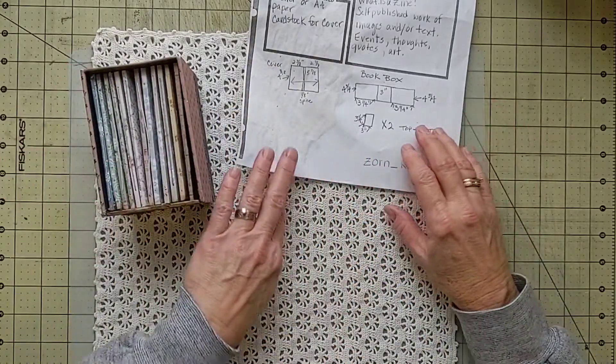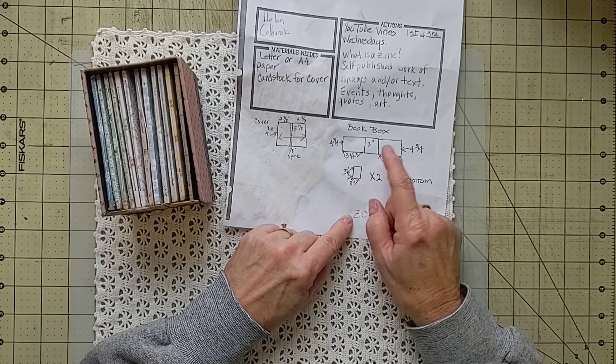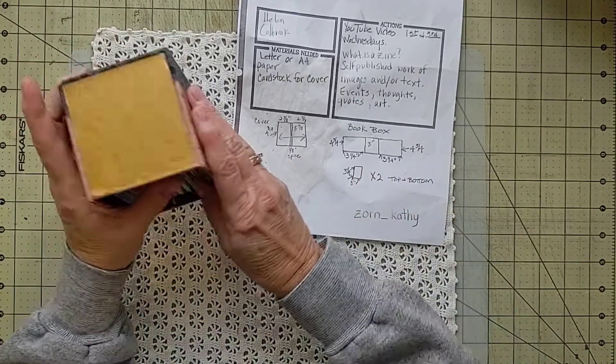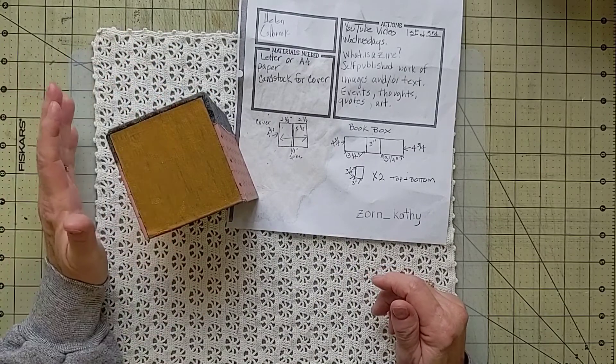Also, I forgot to tell you, sorry, for the bottom and the top it's three and a quarter inches, three and a quarter inches this way and then three inches wide to match the spine.